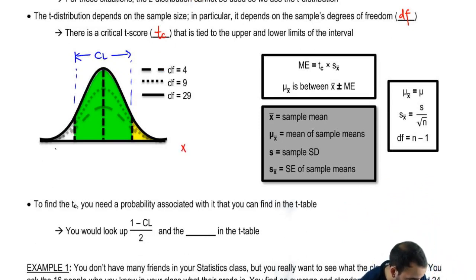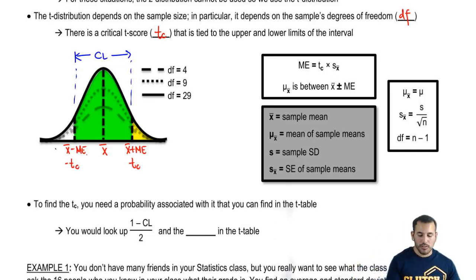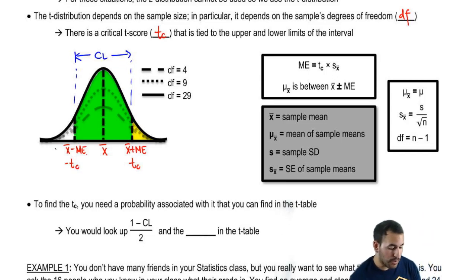So, we'll have a sample mean here. And here in the middle, we have a sample mean plus the margin of error and the sample mean minus the margin of error. Now, these margin of error, or these upper and lower limits are tied to the critical t, both negative and positive. And at the end of the day, we can say with whatever level of confidence that the population mean lies within this interval.